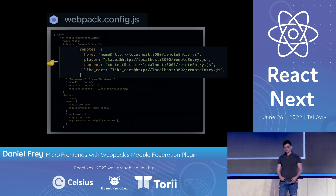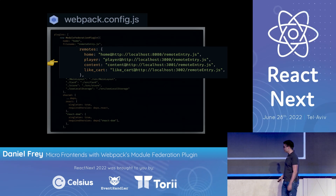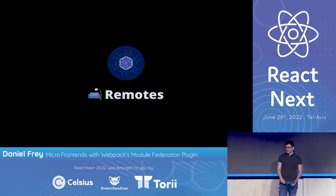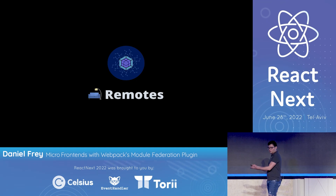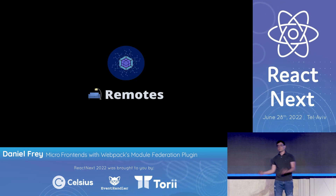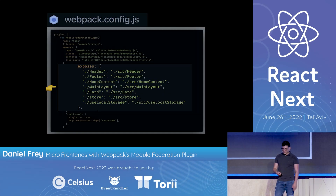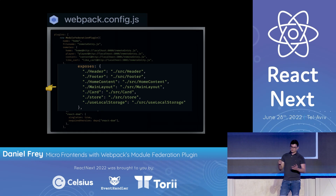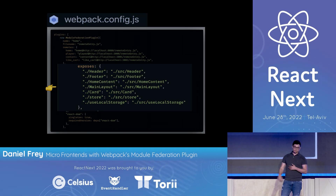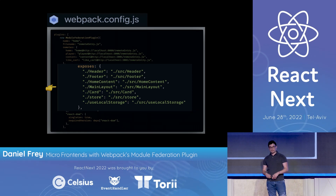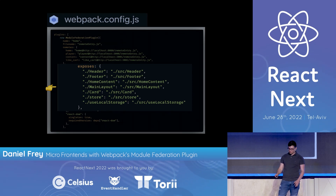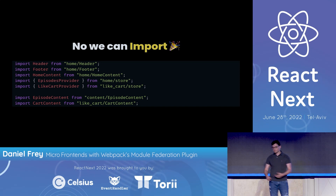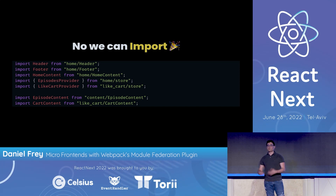Your app can also expose remotes that can be consumed by any federated app. You define an exposed object where each entry is a value you want to expose outside, along with its path. That's it. Once everything is in place, you can simply import it into your application just like you're used to with anything else — nothing new here.